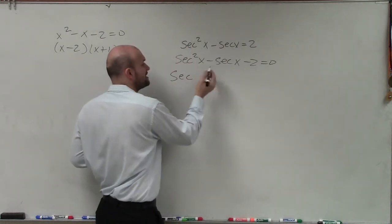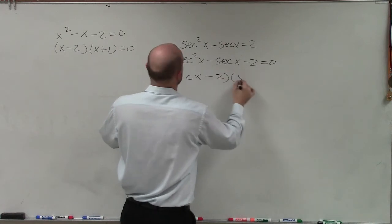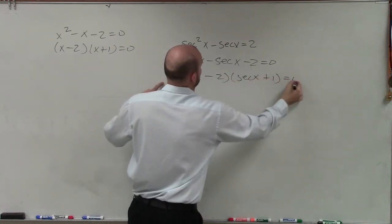So in this case, I'm going to use the same thing. But now it's just going to be in terms of secants. So I have secant of x minus 2 times secant of x plus 1 equals 0.